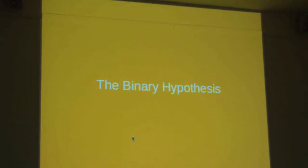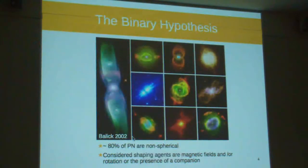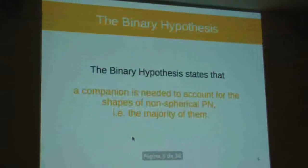So the binary hypothesis. The majority of planetary nebulae are asymmetric - about 80% of them, as you know. So there's different shaping agents that are considered. I won't talk about the magnetic field or rotation, but I'll focus on the presence of the companion that would provide angular momentum or energy to shape the ejecta. So the binary hypothesis, the strict binary hypothesis, states that a companion is needed to account for the shapes of the non-spherical PN, the majority of them.